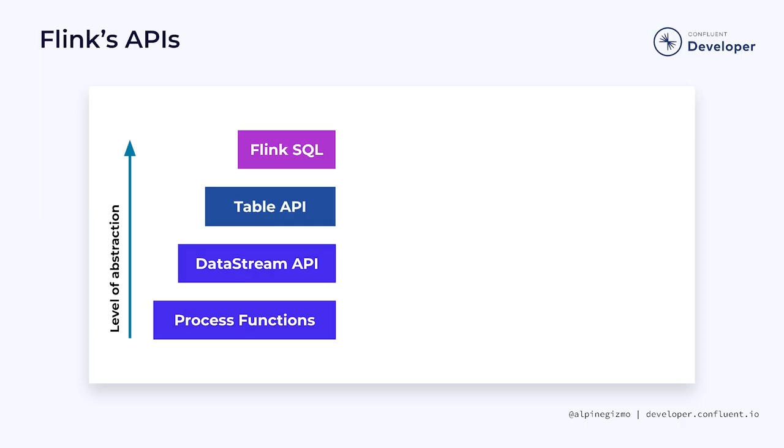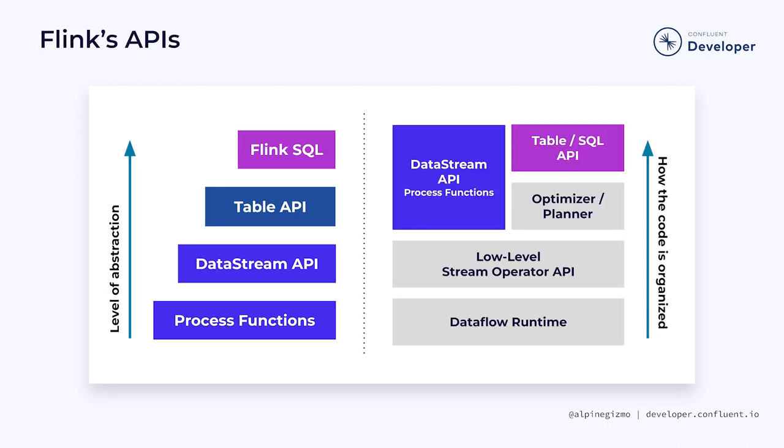It's worth noting that these different APIs are all interoperable. It's not that you must choose one of these APIs to the exclusion of the others. In fact, a single Flink application could use all of these APIs together. The previous diagram, repeated here, depicts the increasing level of abstraction as you move up this API ladder.